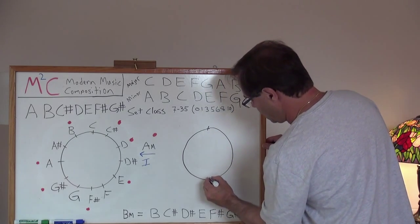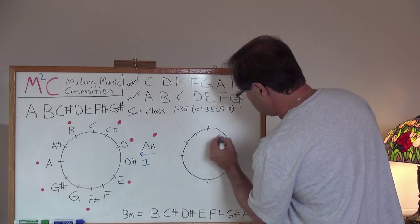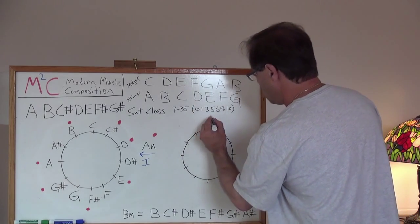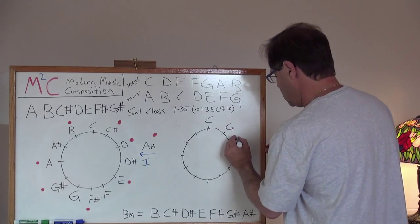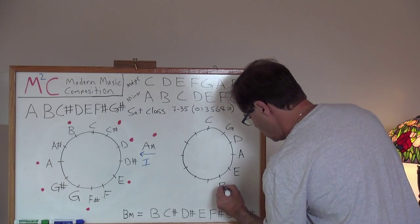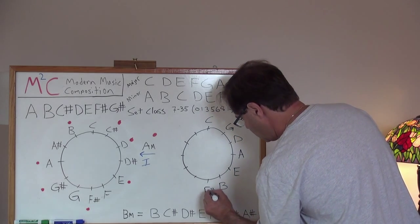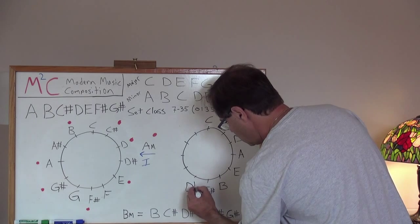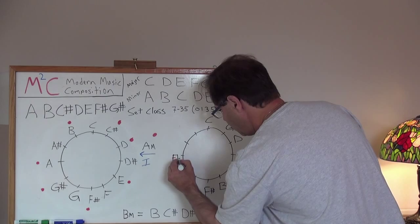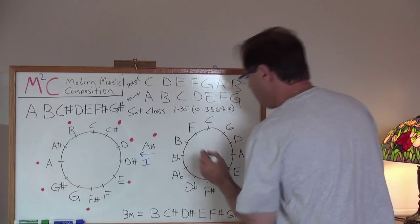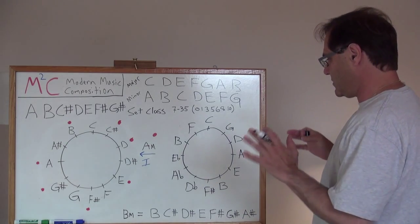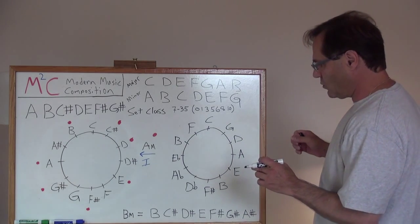I always start off with my quarters so I can get a decent something or other. C, G, D, A, E, B, F sharp, D flat, A flat, E flat, B flat, F major. I'm not going to write the minors because right now I'm just thinking about some symmetry in my mind.